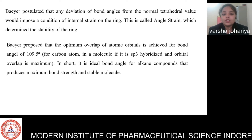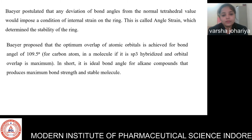Bayer proposed that optimum overlap of atomic orbitals is achieved at a bond angle of 109.5 degrees for a carbon atom. In a molecule, if sp3 hybridized orbital overlap is maximum, the ideal bond angle for alkane compounds produces maximum bond strength for a stable molecule.